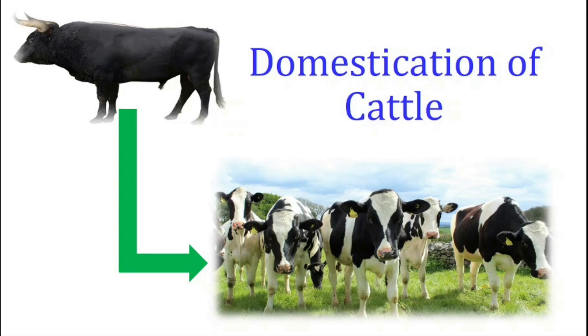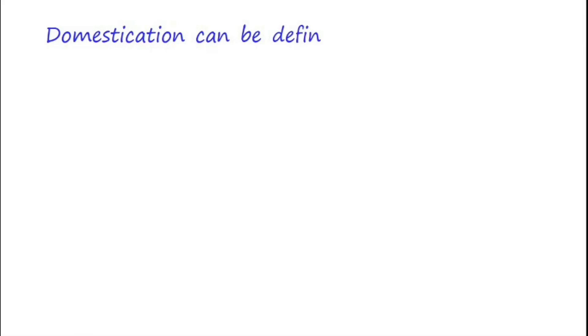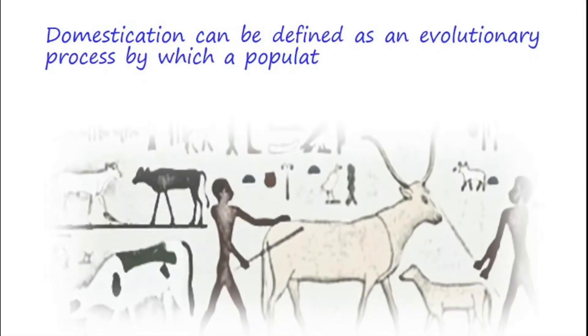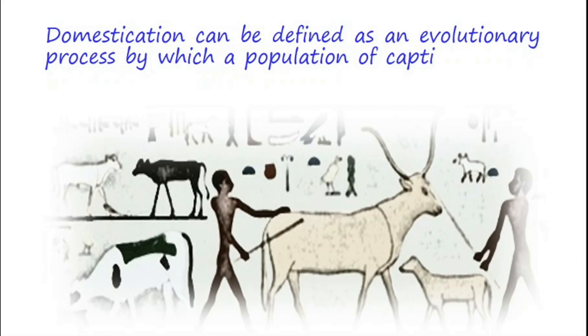Welcome to Animal Sciences Channel. This video is about domestication of cattle. Domestication can be defined as an evolutionary process by which a population of captive animals adapt to man and the environment he provides.